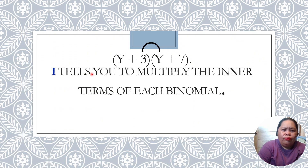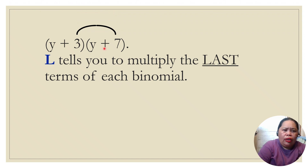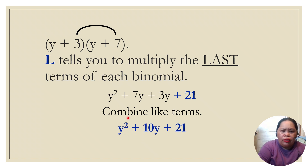I tells you to multiply the Inner terms of each binomial: 3 times y equals 3y. L tells you to multiply the Last terms of each binomial: 3 times 7 equals 21. Combining like terms: y squared plus 7y plus 3y plus 21 gives us y squared plus 10y plus 21, which is the final answer.